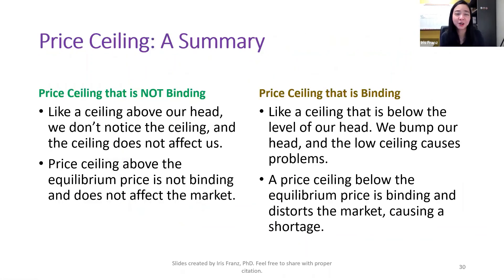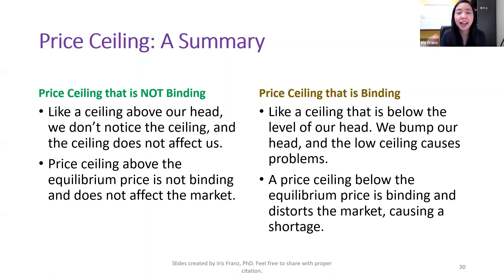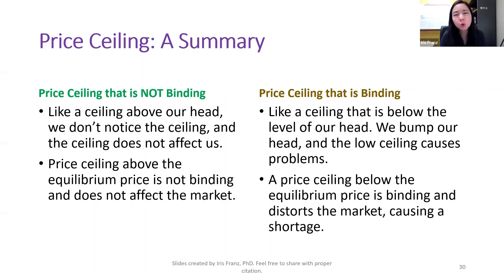In summary: if your price ceiling is above the equilibrium price, then it is not binding and it will not affect the market — just think about a ceiling above our head, we don't bump our head and it does not affect us. But if your price ceiling is below the equilibrium price, then it is binding and it will create a shortage — just like a ceiling that's too low, lower than the position of our head, we'll bump our head and it creates a problem. This concludes our price ceiling. I hope this helps, and we'll see you next time.